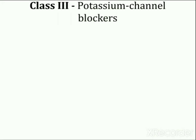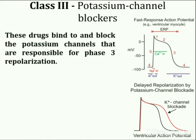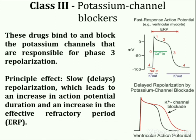Mode of action of class 3 potassium channel blockers. Potassium channel blockers bind to and block the potassium channels that are responsible for phase 3 repolarization. Therefore, blocking these channels slows repolarization, which leads to an increase in action potential duration and an increase in effective refractory period. On the electrocardiogram, this increases the QT interval, which represents the time taken for ventricular depolarization and repolarization. This is the common effect of all class 3 antiarrhythmic drugs. The electrophysiological changes prolong the period of time that the cell is unexcitable and therefore make the cell less excitable. By increasing the ERP, these drugs are very useful in suppressing tachyarrhythmias caused by re-entry mechanism.